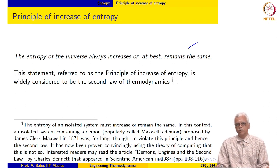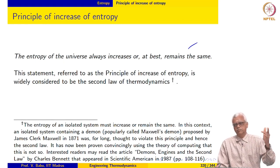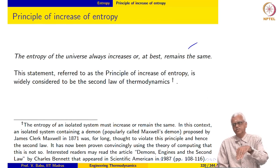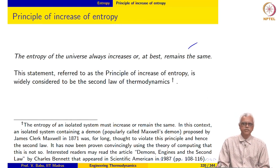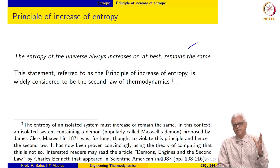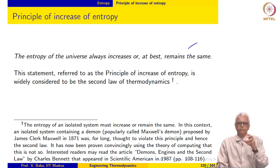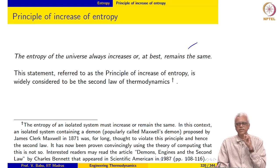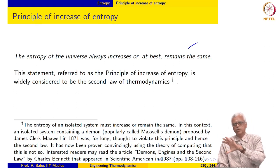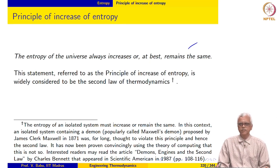Our development followed the Kelvin-Planck statement, then the Clausius statement, then the absolute temperature scale, the efficiency of a Carnot cycle, then entropy, Clausius inequality, and from there we arrived at the principle of increase of entropy. This is the sequence that mechanical engineers tend to follow because we always ask: what is the maximum efficiency of the engine? That is the path we have gone down, finally arriving at this principle.